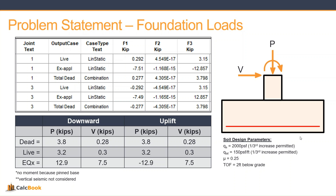In the lower right-hand corner we have our soil design parameters. We have an allowable vertical bearing pressure of 2,000 PSF with a one-third increase allowed for seismic or wind loading. We have a lateral bearing pressure of 150 PSF per foot of depth, also with a one-third increase for wind and seismic. The coefficient of friction is 0.25, and we'll place the footing with two feet of soil above the top of the footing.